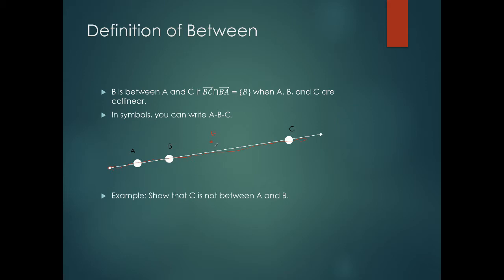Example: show that C is not between A and B. Let's check our stipulations. Are A, B, and C collinear? Well yes, they are in this case. We then want to check, does C—we kind of want to check this idea except instead of using B this time we're using C.